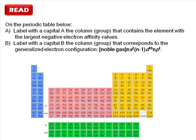Part A asks us to label the column that has the most negative electron affinity values. In other words, the column of elements that is most likely to steal an electron and form a minus one ion. Part B asks us to label the column that corresponds to the generalized electron configuration shown.